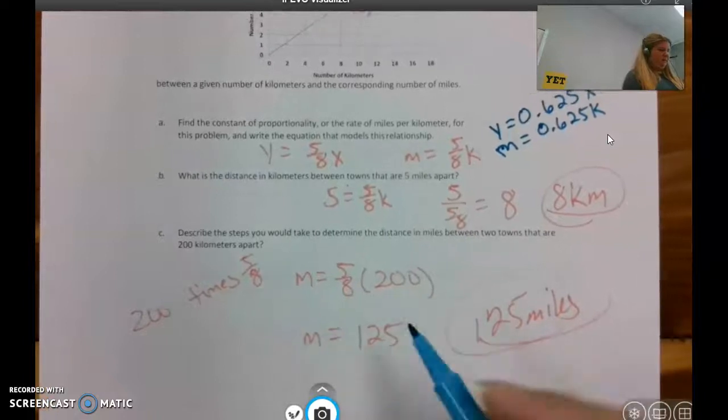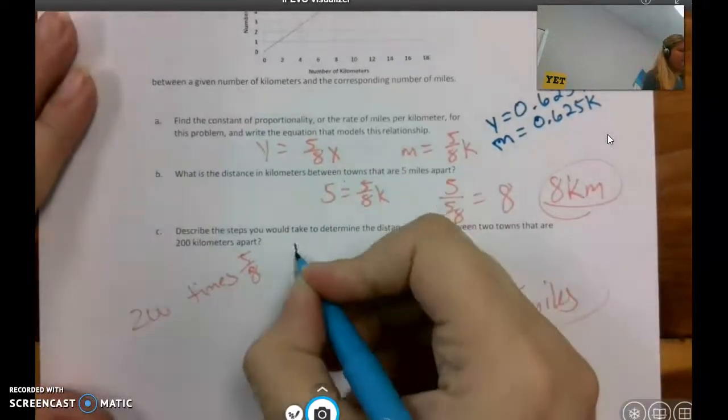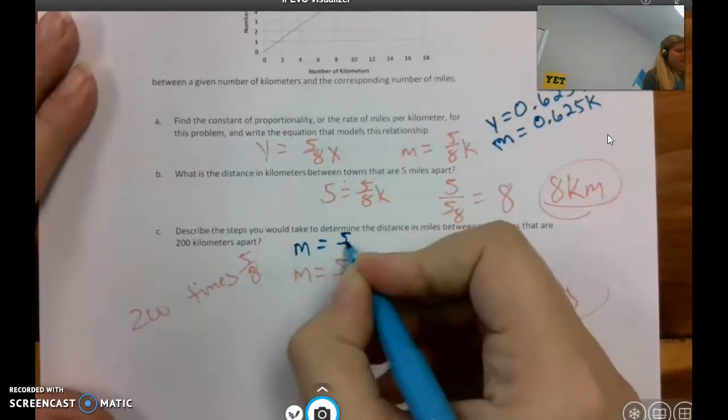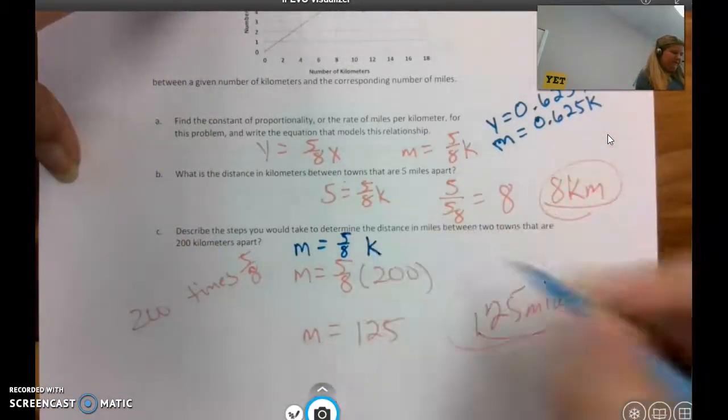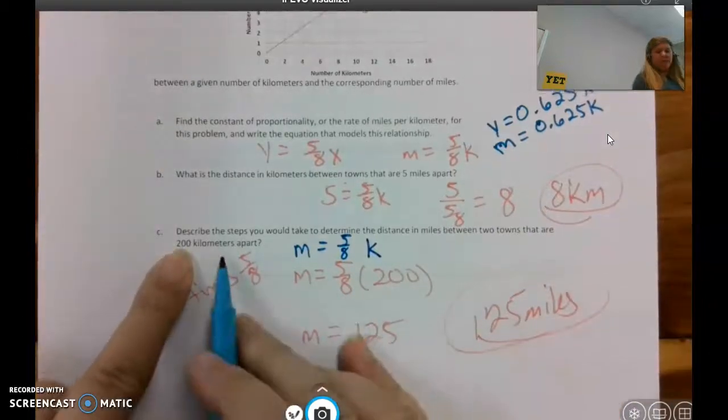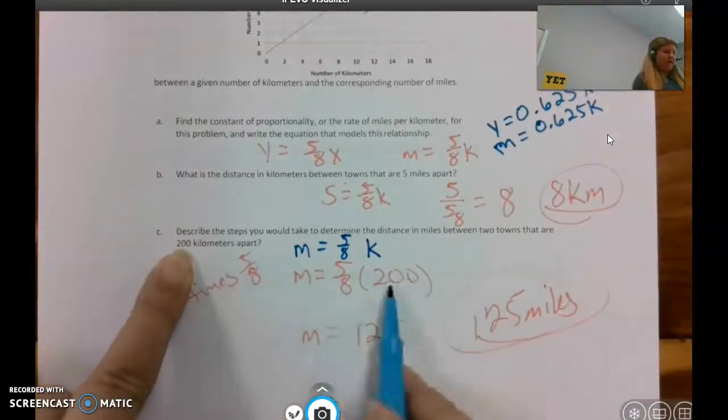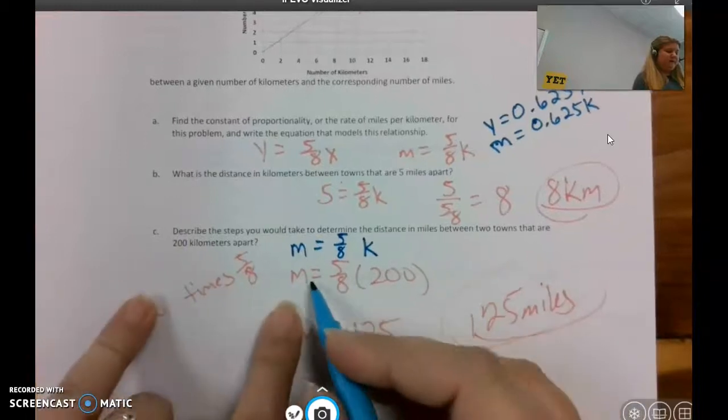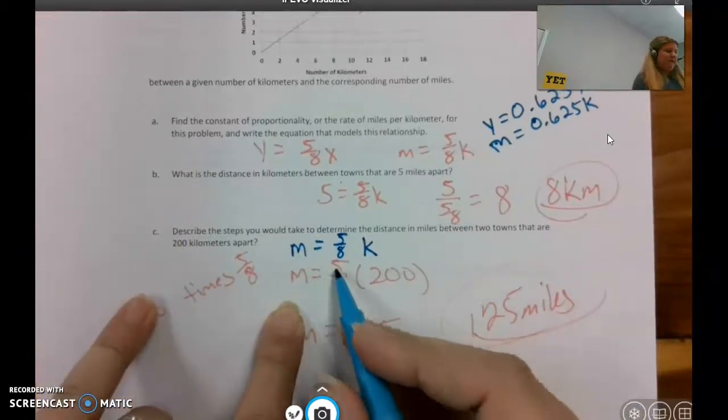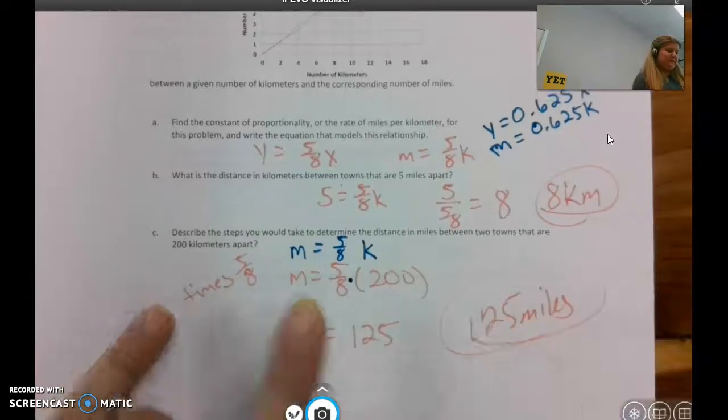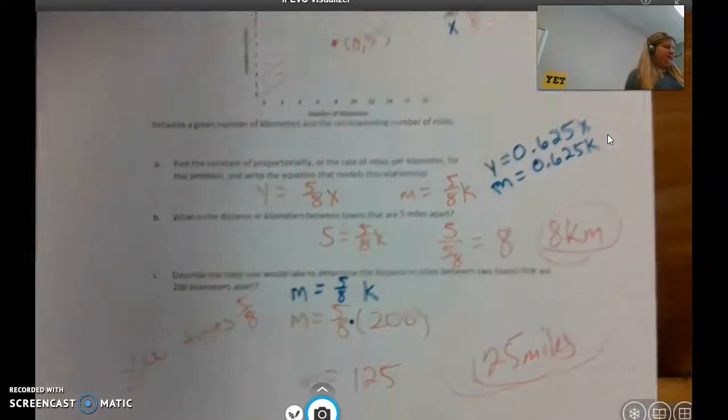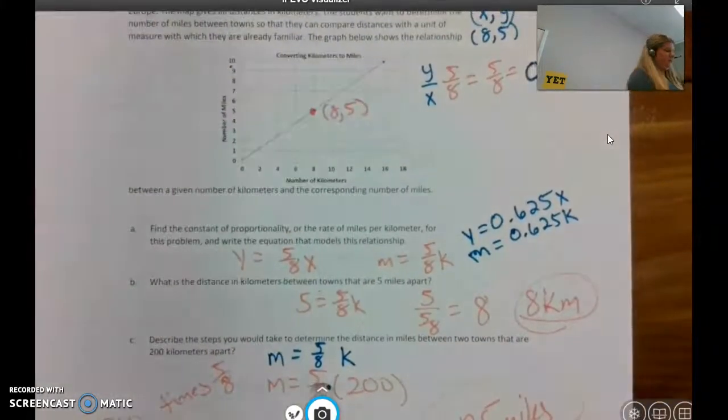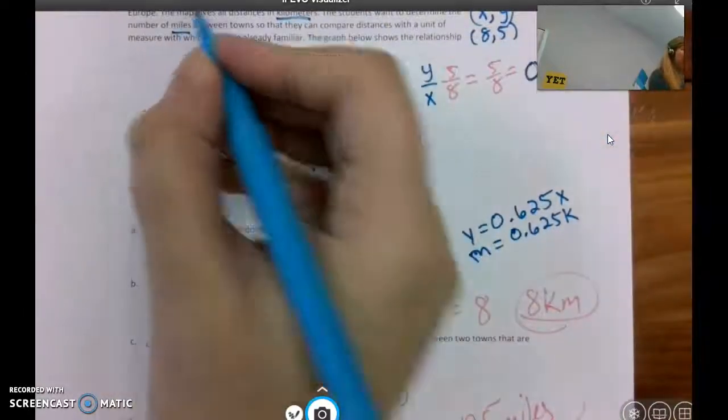Again, I have my original equation. Probably best to go ahead and do the whole thing. Okay, so if it's 200 kilometers apart that way, I would end up doing the number of miles equals 5/8 times 200, and the number of miles is 125. So this is conversion between kilometers and miles. 5/8 is your... you know, right.